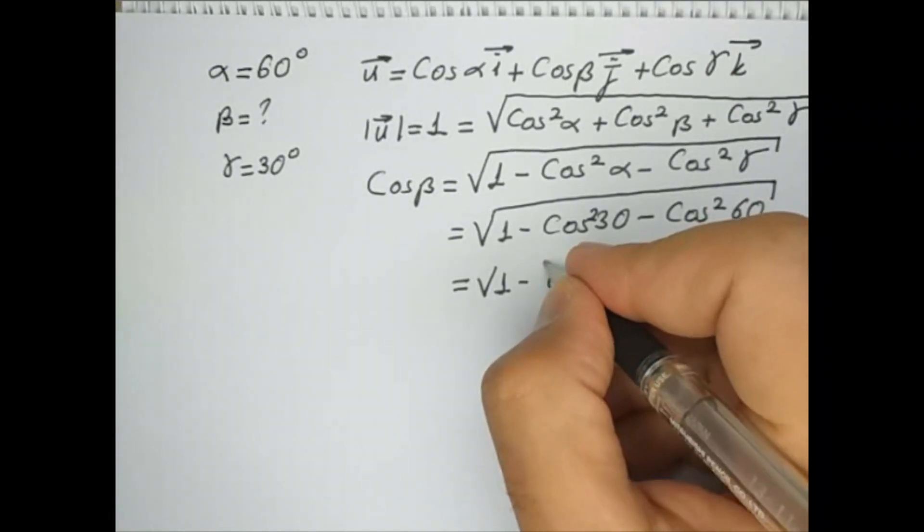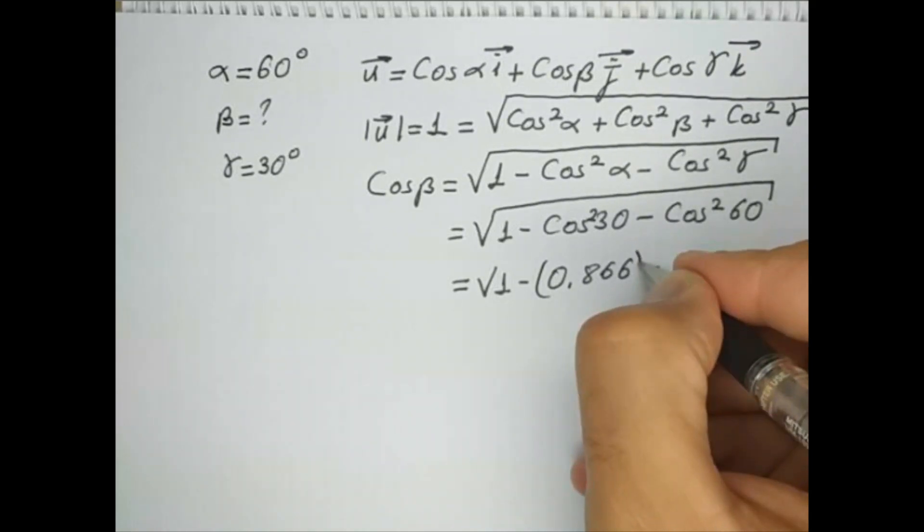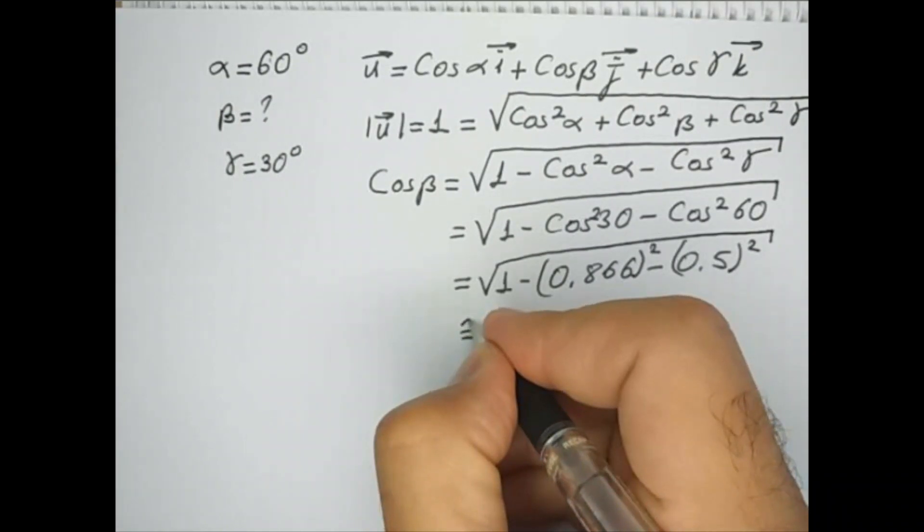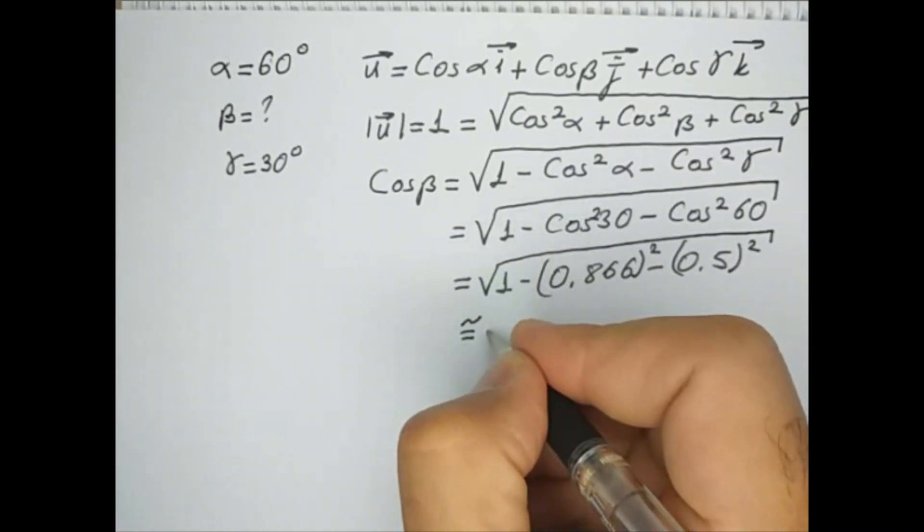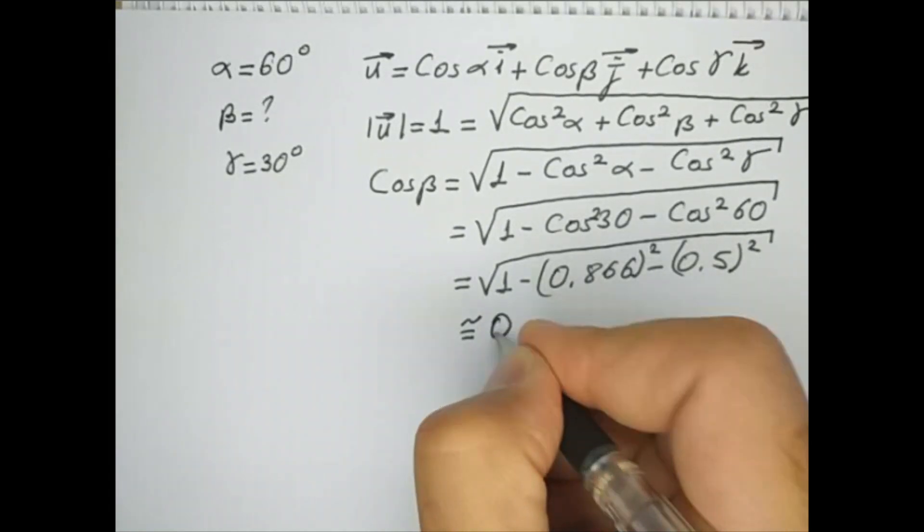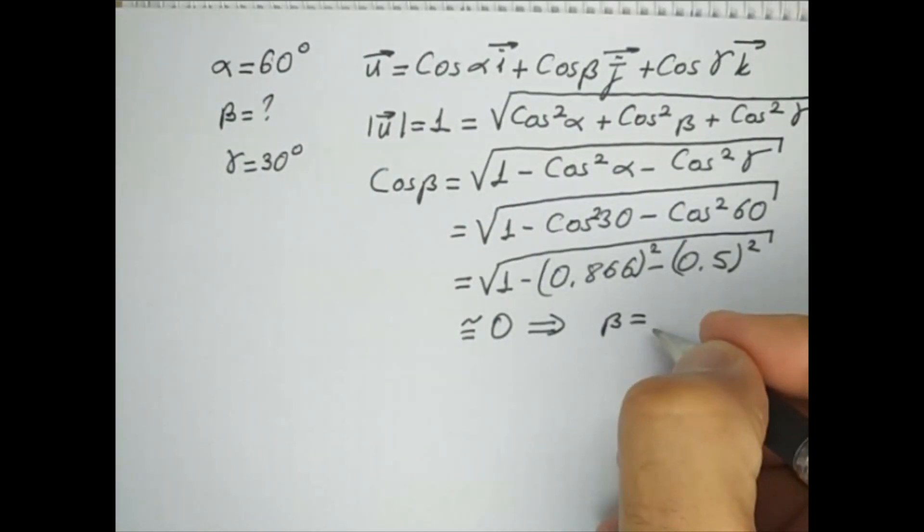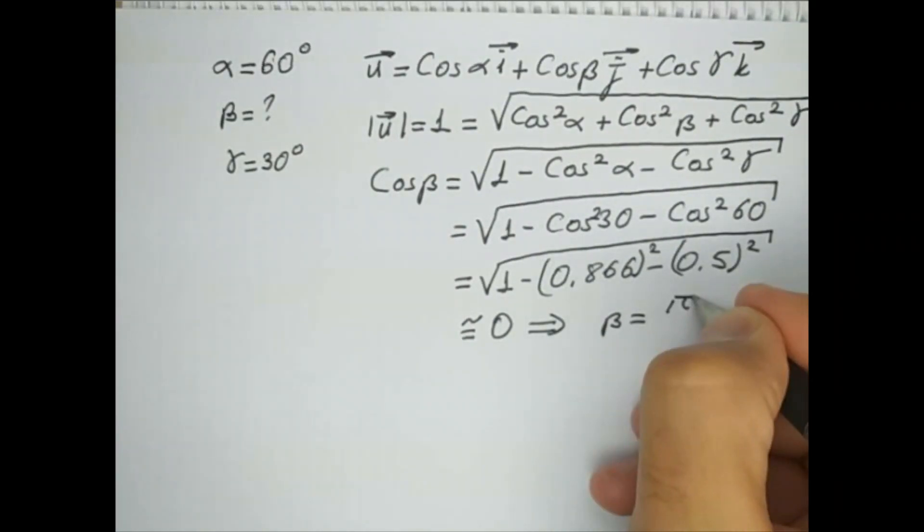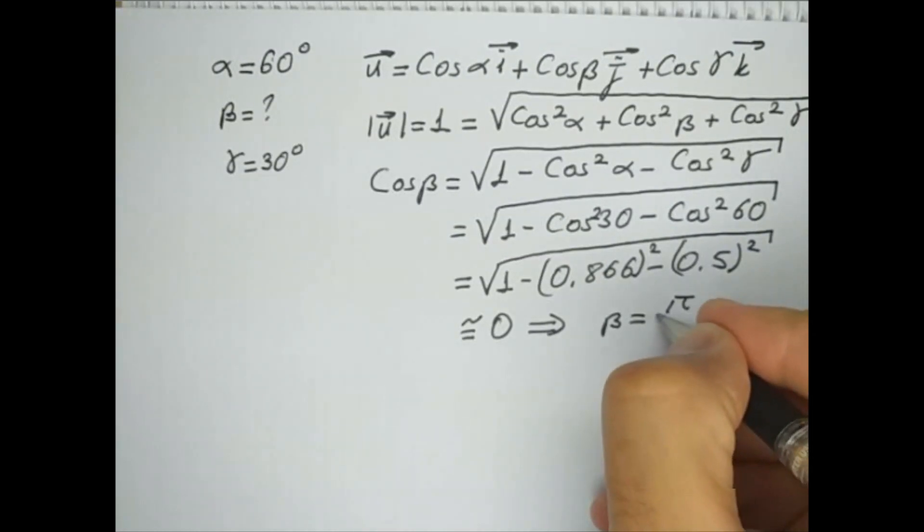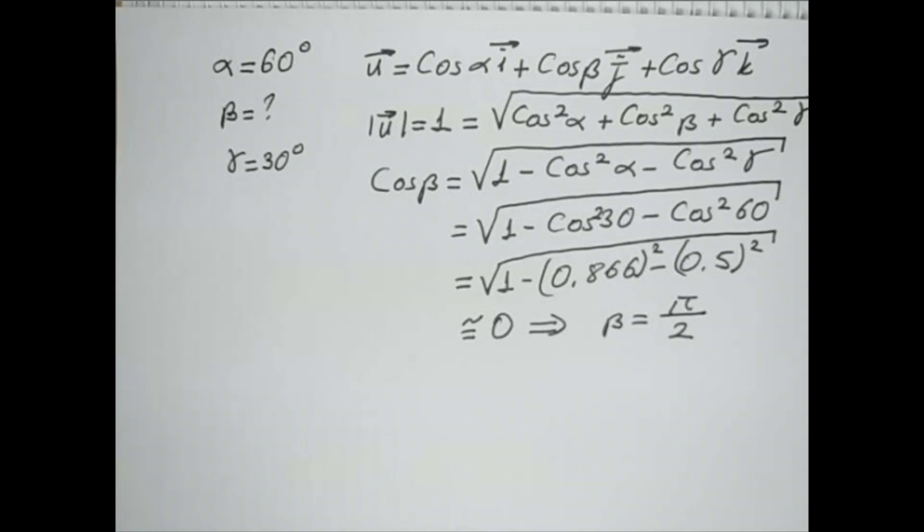And this gives us 0. And from here we can say that beta is equal to pi divided by 2. Here, because of the roundoffs, this is why it is very close to the 0. Okay, now we know the angle beta.